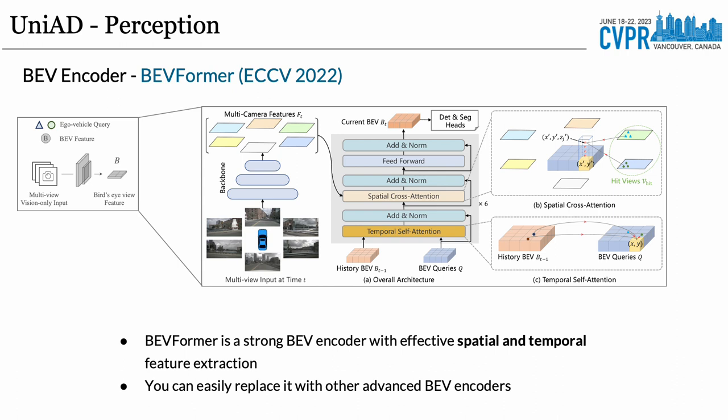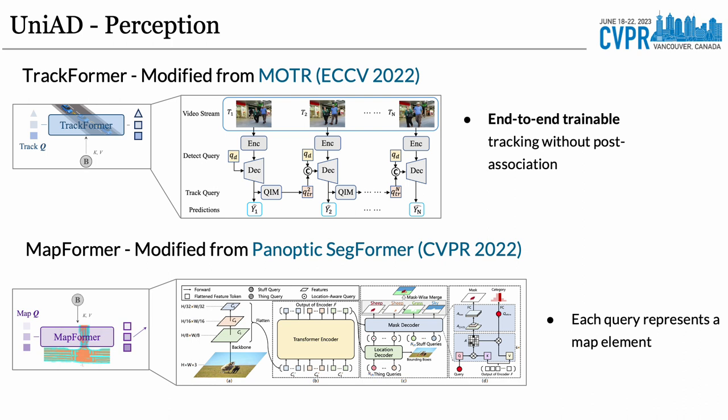We adopted the BEVFormer as our BEV encoder due to its strong capability of spatial and temporal feature extraction. The TrackFormer is modified from the 2D multi-object tracking method MOTR; we lift it to 3D scenarios and leverage its capability for end-to-end tracking with differentiable features. The MapFormer is based on a 2D panoptic segmentation method, Panoptic SegFormer. We sparsely represent road elements as map queries, which are further utilized in MotionFormer for agent-map interaction.